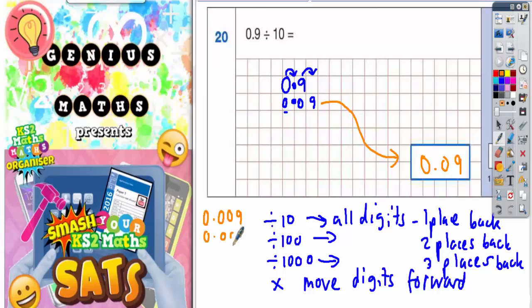If you divide it by 10 again, you'd get 0.0009. Each time that you divide it by 10, the 9 would go backwards one more place.